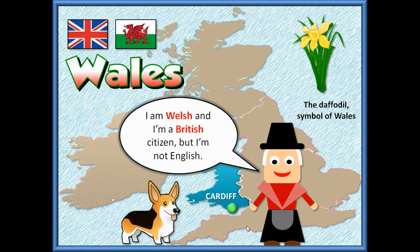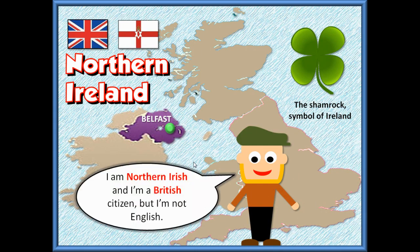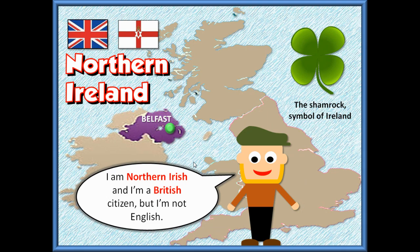The third country within the UK is Wales. The capital of Wales is Cardiff. The symbol of Wales is the daffodil, and this is the flag of Wales with a red dragon. People from Wales are Welsh or British — they are not English.